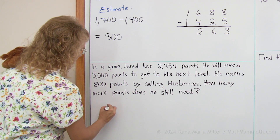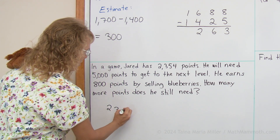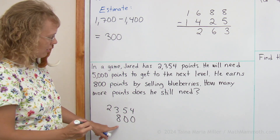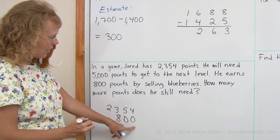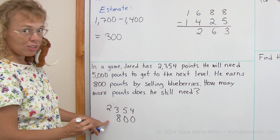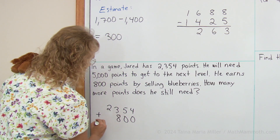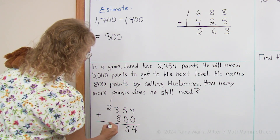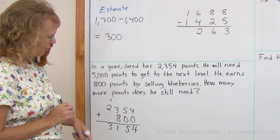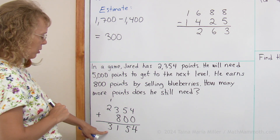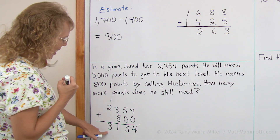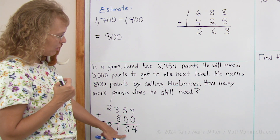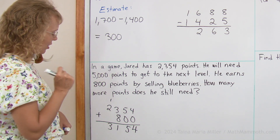So we first add 2354 and 800. Notice I need to line up my hundreds, tens and ones — I don't line up the 8 under the 2, because 2 is for the thousands. We get 4, and 5, and 11, and 3. He now has 3154 points.